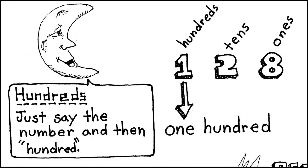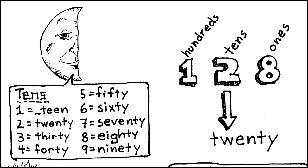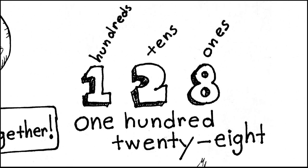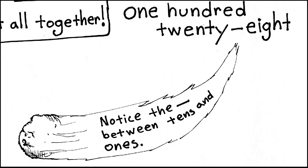Now we have one hundred twenty-eight. We just put it all together and we get one hundred twenty-eight. Notice that there is a hyphen — that little line — between the tens and the ones place, between the twenty and eight. Whatever number you have in the tens and whichever number you have in the ones, you need to put a hyphen between them.